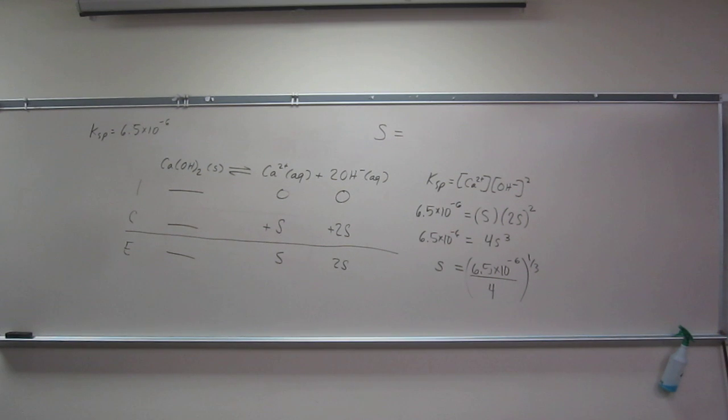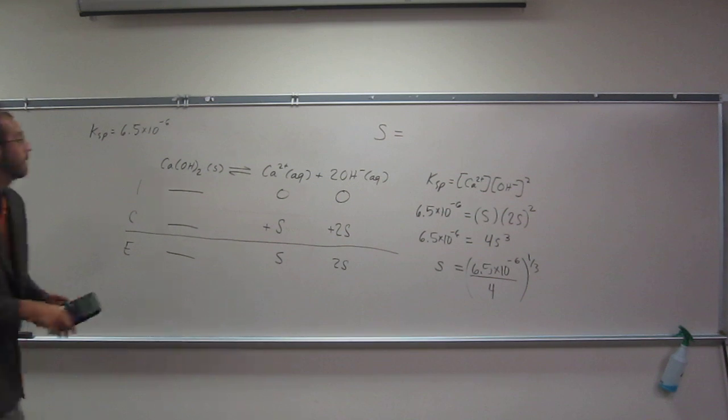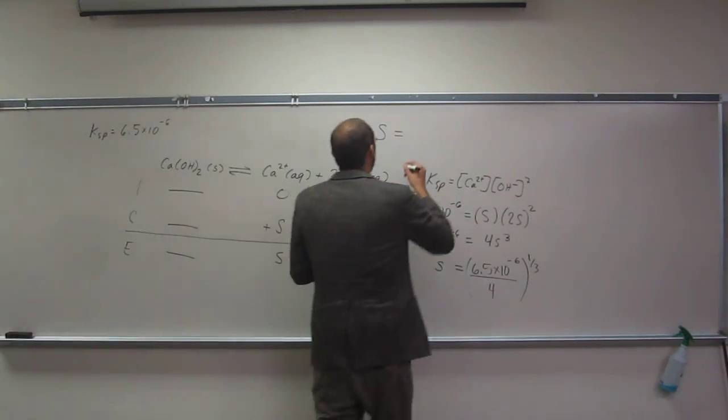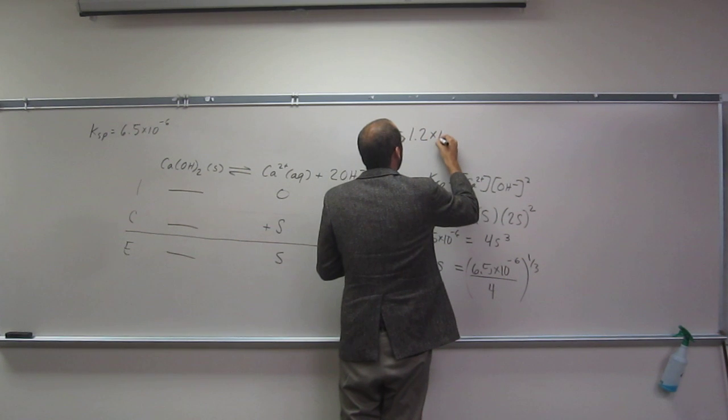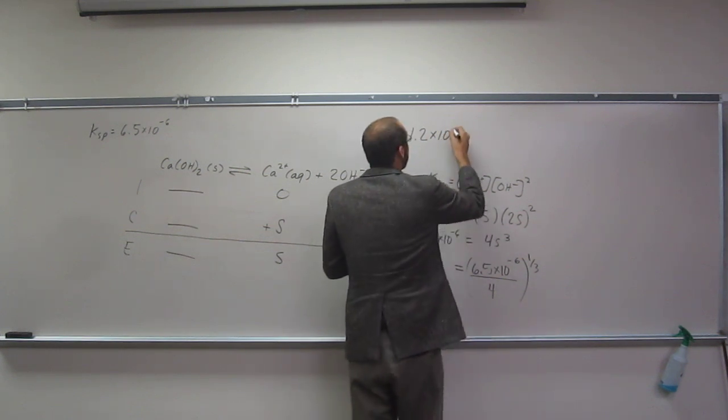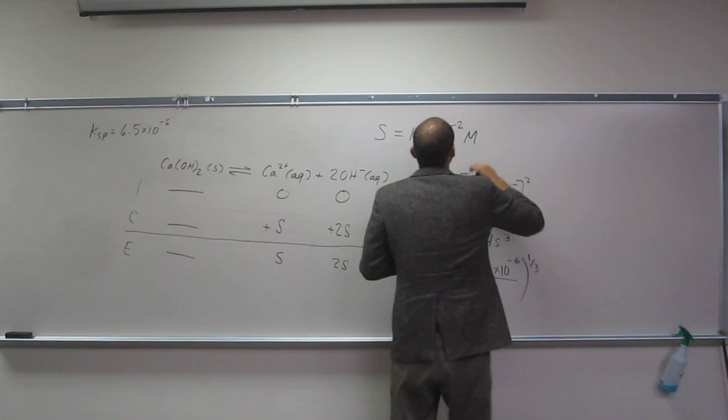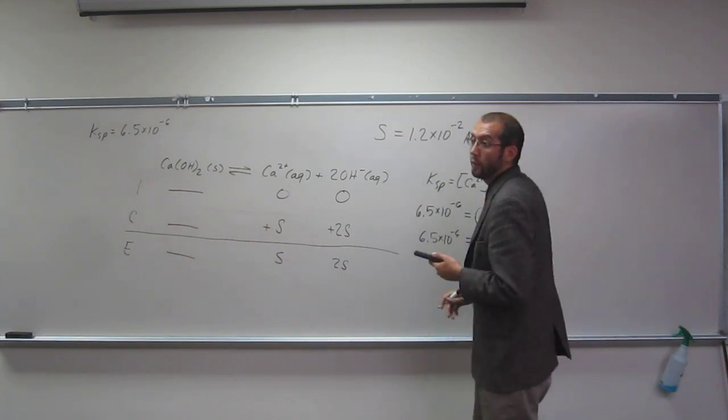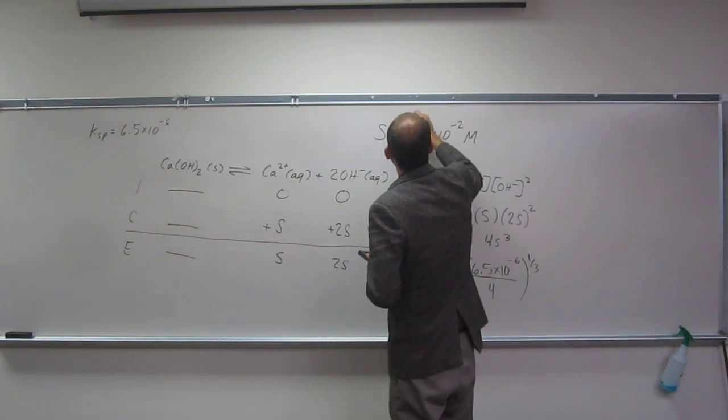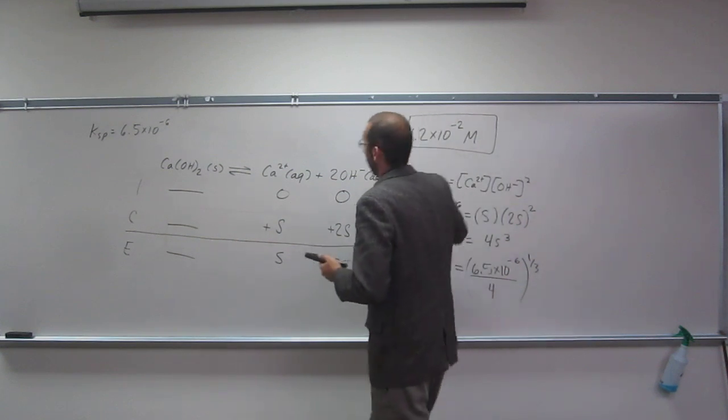And I get to two significant figures, 1.2 times 10 to the negative 2 molar. So that's the solubility for calcium hydroxide.